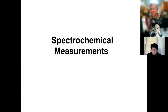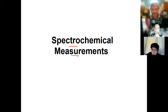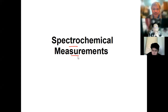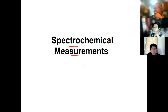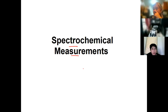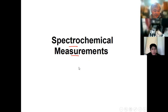Chapter 2 in the book is about spectrochemical measurements. We're going to encounter some terms here. In spectrochemical measurement, we look at how we use optical instruments or spectrochemical instruments in measuring the physical properties of a given sample.